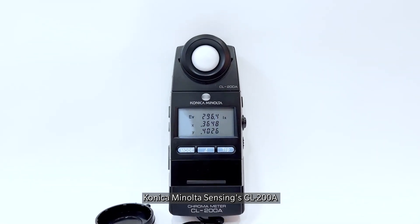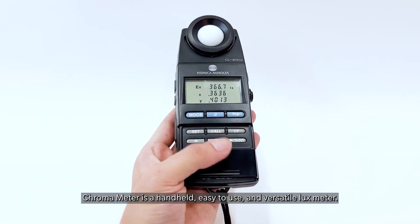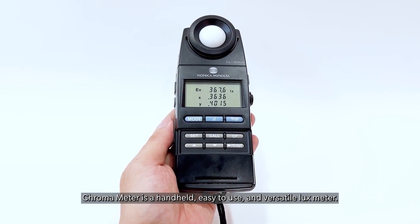KONICA MINOLTA SENSING CL200A CHROMAMETER is a handheld, easy to use, and versatile lux meter.